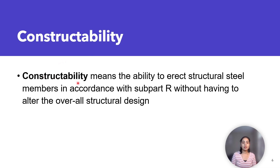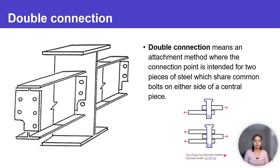Constructability means the ability to erect structural steel members in accordance with sub-part R without having to alter the overall structural design. Double connection means an attachment method where the connection point is intended for two pieces of steel.